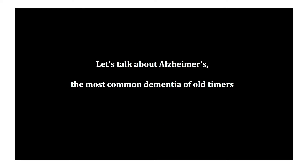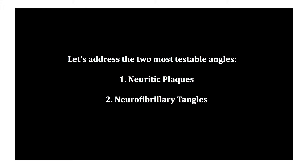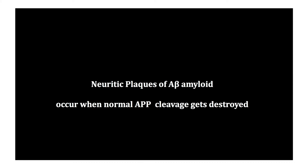Let's talk about Alzheimer's, the most common dementia of old timers. Let's address the two most testable angles: neuritic plaques and neurofibrillary tangles. Neuritic plaques of A-beta-amyloid occur when normal APP cleavage gets destroyed.